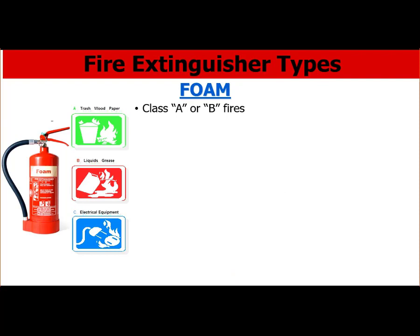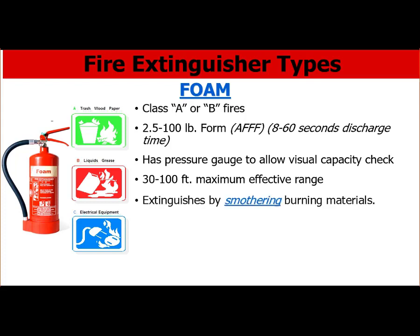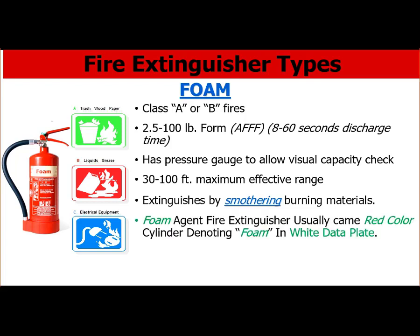Foam type fire extinguishers, also called Aqueous Film Forming Foam (AFFF), are used for Class A and Class B fires. General capacity is 2.5 to 100 lbs and they last up to 8 to 60 seconds of discharge time. Like DCP and water, they have a pressure gauge to check condition. They have a maximum effective range of 30 to 100 feet and extinguish fire by smothering, similar to DCP and CO2. They usually come in a red cylinder with 'foam' denoted in a white data plate.